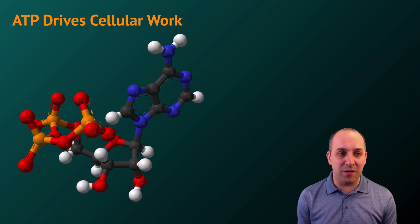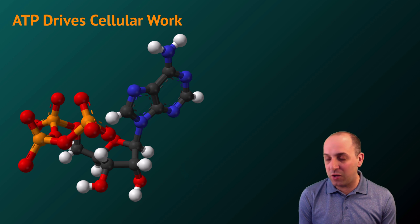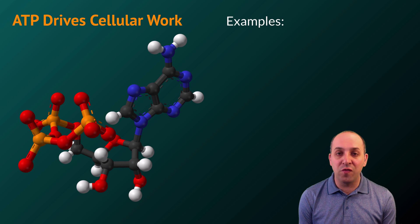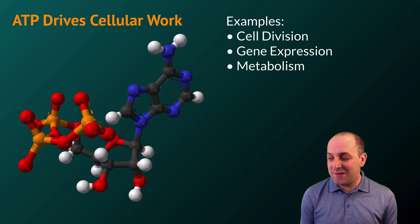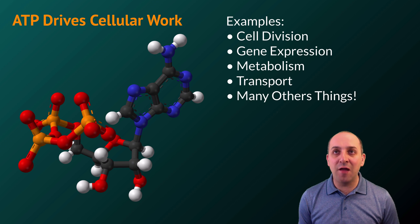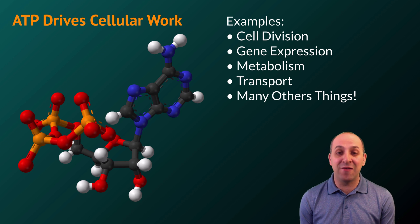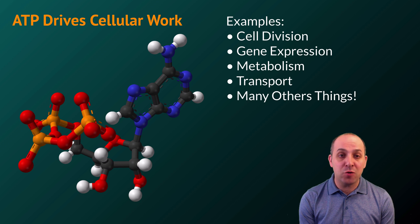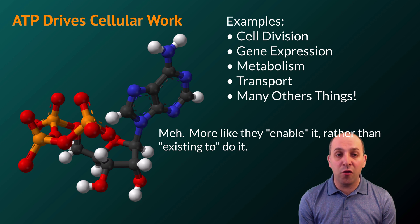Why do we need so much ATP? ATP turns out to be one of the major molecules that drives cellular work. Examples of cellular work include cell division, gene expression, metabolism, transport, and many other things. Almost without exception, any time cells need to move molecules around or do things involving molecules, they are using ATP. It's an incredibly important molecule for all cells on the planet, and the major metabolic processes — respiration and photosynthesis — exist to take energy in other forms and store it in the chemical bonds that hold ATP together.